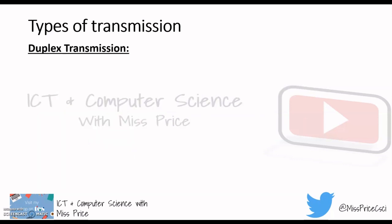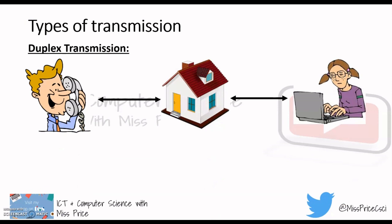Then there's duplex transmission — something you're probably very familiar with. All the data can go at the same time in both directions. I remember years ago when we had an internet connection, if someone was using the internet they couldn't use the landline and phone anybody at the same time. But thanks to broadband, people could talk on the phone and use the internet simultaneously. So the data can actually be sent in both directions simultaneously.